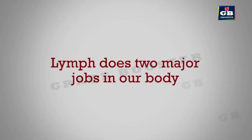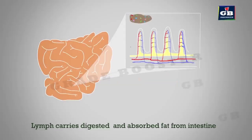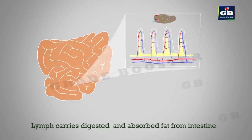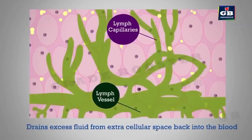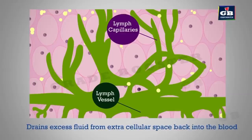The lymphatic system does two important jobs. First, lymph absorbs digested fats in the intestines. Second, it collects extracellular fluid and deposits it back into the bloodstream. These are the important points of the animal transport system.